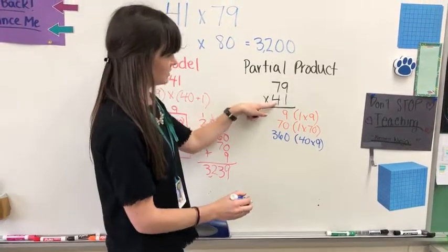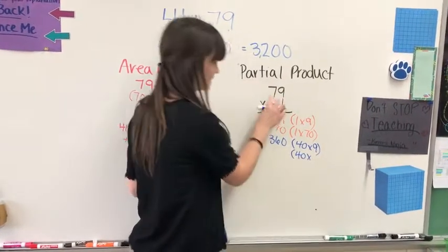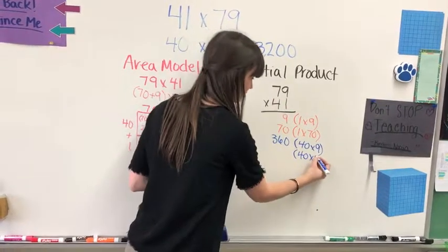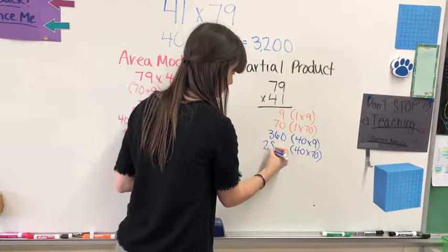The next piece, I have this 4, which is still 40, times this 7, which is 70, which gives us our next answer of 2,800.